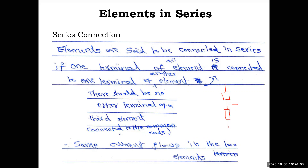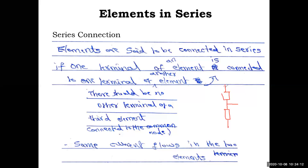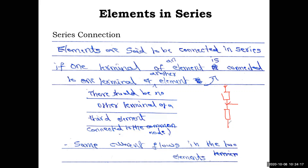The property of series connection is that the same current flows through all elements. Whatever current enters the first element, the same current enters the second element — and so on for any number of elements — while the voltage is different across each element. We will now discuss resistors, inductors, capacitors, and voltage sources in series.